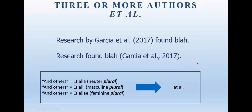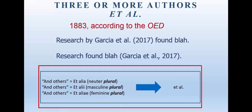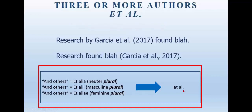Once you hit three or more authors for in-text citations, you're entering et al territory. Et al means 'and others' — it's Latin. Being Latin, it has three different kinds of 'others': neuter, masculine, and feminine. When people started abbreviating this more than 100 years ago, they didn't want to mess with all those different Latin words, so they abbreviated it 'al' with a period — which covers all of them — whereas 'et,' like the French, just means 'and.' That's why 'al' takes the period, because it is the abbreviation.